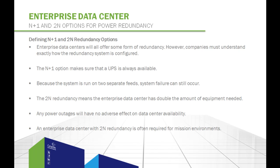On the other hand, 2N redundancy means the enterprise data center has double the amount of equipment needed. The equipment runs separately with no single points of failure. This configuration represents a fully redundant system and more reliable operation. Any power outages will have no adverse effect on data center availability.